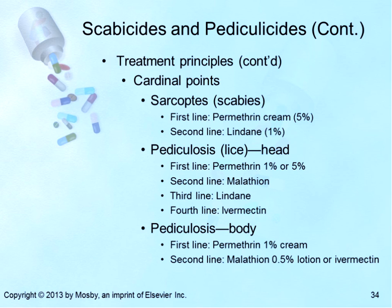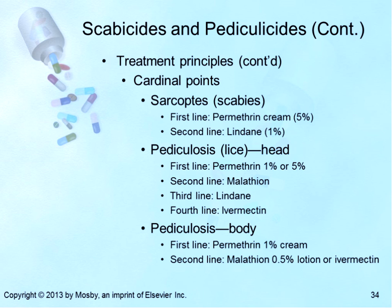Permethrin is a synthetic compound that is more effective and less allergenic than natural products. Significant resistance to permethrin 1% has developed recently, and 5% is more effective. Malathion is an organophosphate pesticide — probably the fastest at killing lice, though disadvantages include odor and concerns regarding the alcohol vehicle; it is effective against lice resistant to permethrin. Lindane is a slow-killing pesticide stored in adipose and nerve tissue; over the past 20 years it has become less effective. Ivermectin is indicated for river blindness and strongyloidiasis and is used for head lice when all other therapies have failed; it is not ovicidal so a second treatment is necessary and is given orally, not topically.